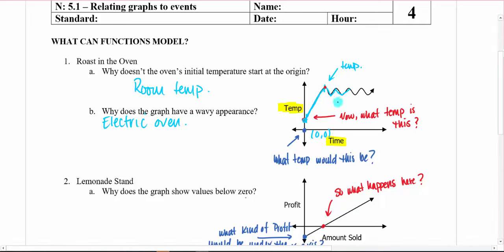This would be the preheating stage where the oven's warming up to the temperature that you want. That's the temp that you want right there. And then the next question is, why does the graph have a wavy appearance? Why does it go down and back up and down and back up? Pause there for a second, think about it. Hopefully you come up with something. But let's throw in a little piece here. I'm going to add something for you. This is an electric oven. Does that help? Why does it wave up and down?